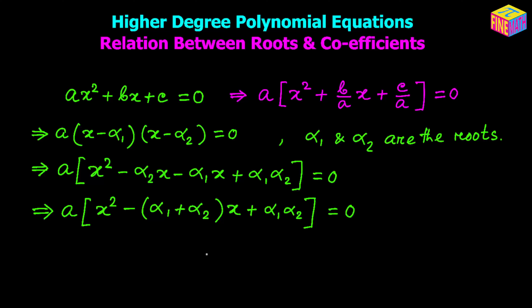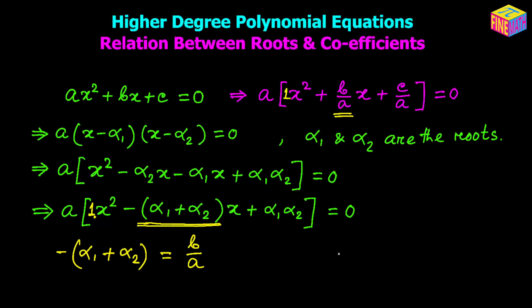We have used the roots in one form and not in the other, but they are the same equation. Comparing them, the coefficient of x squared is 1 in both cases. Looking at the coefficient of x, in one form we have positive b over a and in the other form we have negative of (alpha sub 1 plus alpha sub 2). So they must be equal.